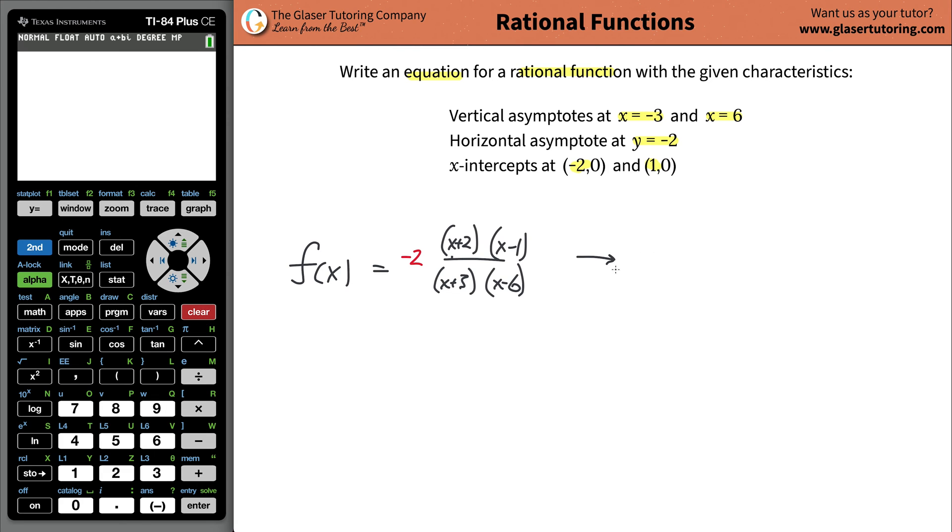So to rewrite this, they might want this not in factored form, but maybe you have to foil it. It would just simply be negative 2, and then on the top you'd have x squared. We know how to foil this.